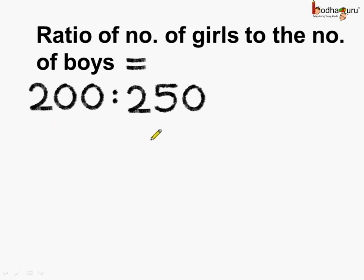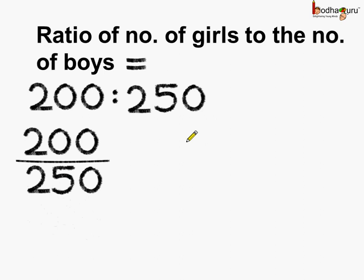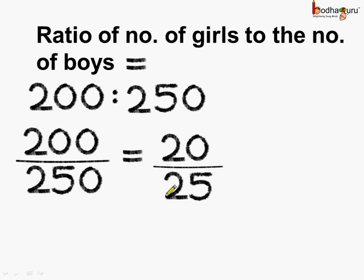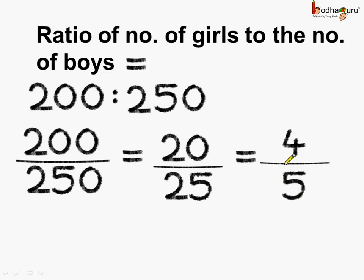It is equal to 200 is to 250. These two are the terms of the ratio. Now we can reduce this ratio: 200 by 250. First, let us divide both the numerator and denominator by 10, and it gets reduced to 20 by 25. We can further reduce by dividing both the numerator and denominator by 5. 5 fours are 20 and 5 fives are 25. So this gets reduced to 4 by 5, and the ratio is 4 is to 5.